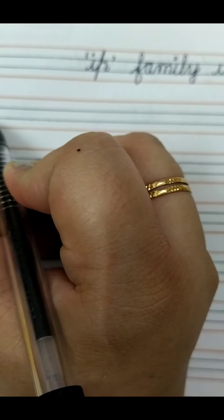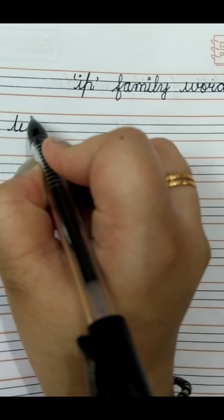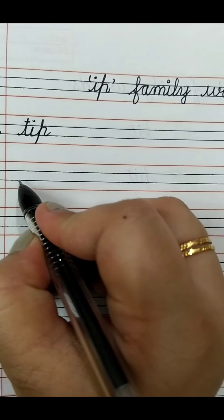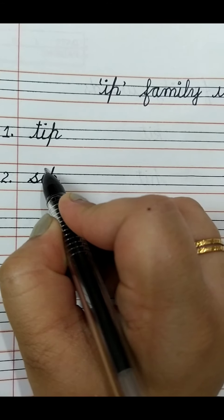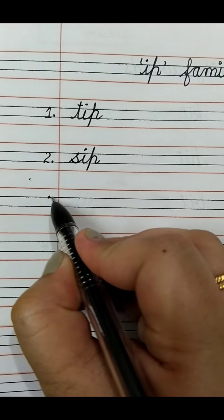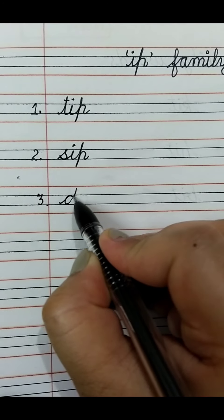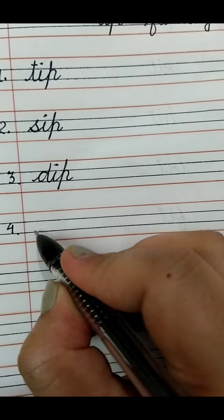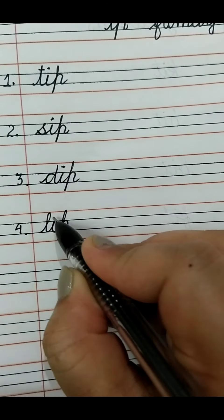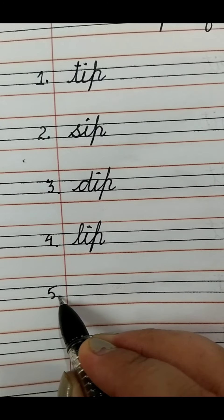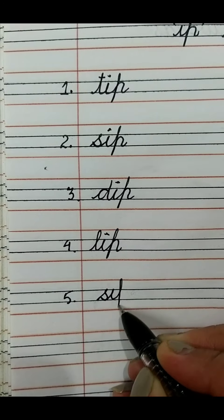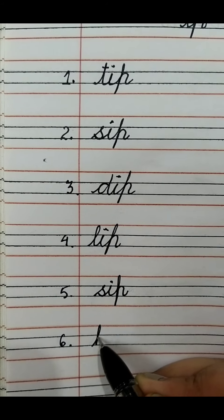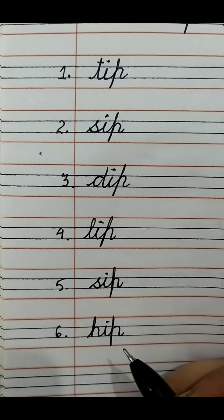Write down number one: T-I-P, Tip. Number two: S-I-P, Sip. Number three: D-I-P, Dip. Number four: L-I-P, Lip. Number five: S-I-P, Sip. Number six, and last: H-I-P, Hip.